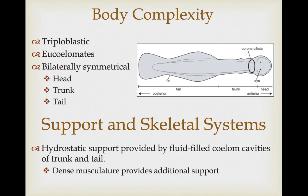They're triploblastic eucoelomates and show bilateral symmetry with a head, trunk, and tail region, with pretty strong cephalization. Their support and skeletal system is primarily hydrostatic — they have a fluid-filled coelom, and the hydrostatic pressure associated with that coelom gives them their shape. They also have dense musculature that provides some additional support.